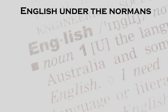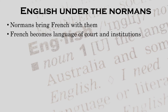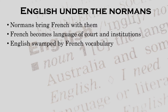In 1066, the Normans conquered England and they brought French with them. Within a very short time, French became the language of the court and, more importantly, also of all important institutions — swamping Old English with French vocabulary. French basically became the official language, pushing Old English into the background. Let's look at just a few examples in some important fields.